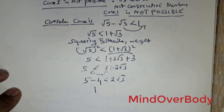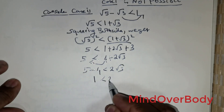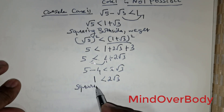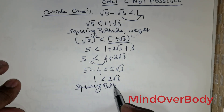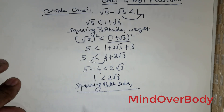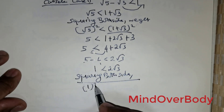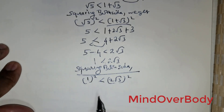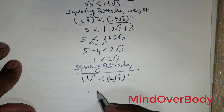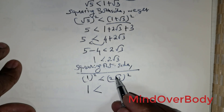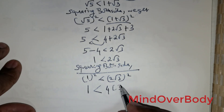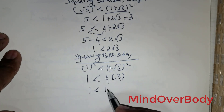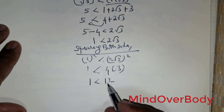Moving 4 to the left side: 5 minus 4 is less than 2 times root of 3, so 1 is less than 2 root of 3. Squaring both sides again: 1 squared is less than (2 times root of 3) squared, giving 1 less than 4 times 3, which is 12. This is clearly true.